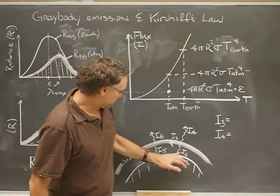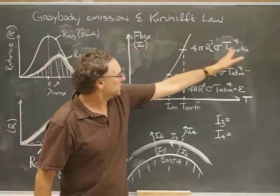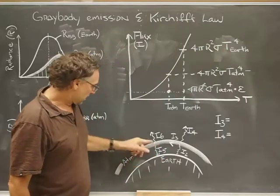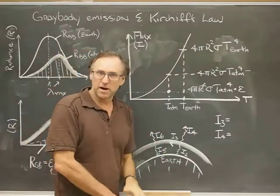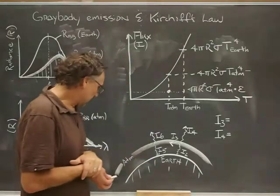I2 here, just filling this out, that would be this term right here because it's the temperature of the Earth. We've got I5. We've talked about how I6 is just equal to I5 because the atmosphere can radiate down or radiate up.